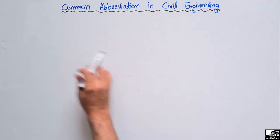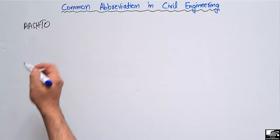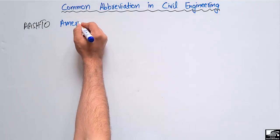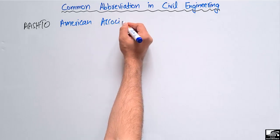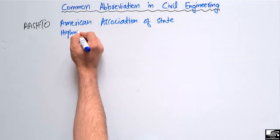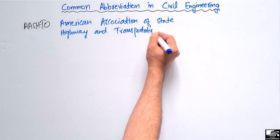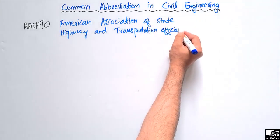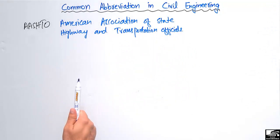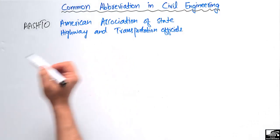Starting with the first one: AASHTO. You might have heard this name before. AASHTO stands for the American Association of State Highway and Transportation Officials. They mostly provide recommendations for different types of pavements and also for different structural designs. They provide different codes for the design of different structural members, and this organization is based in America.